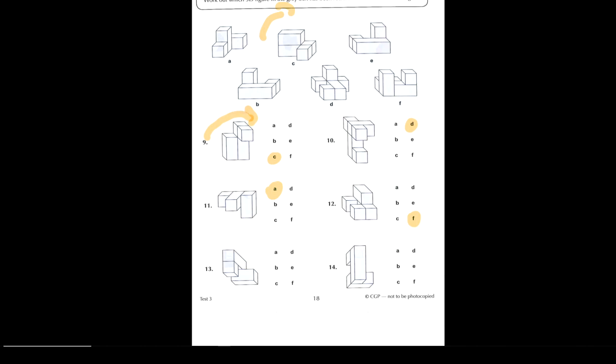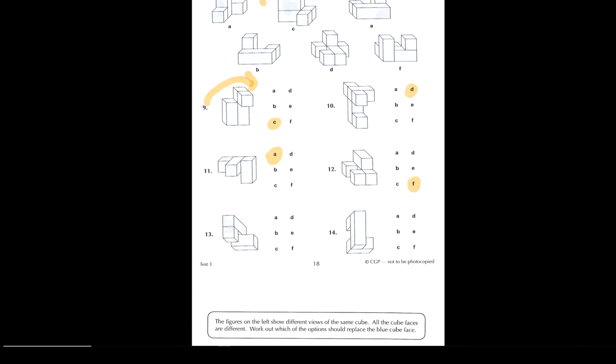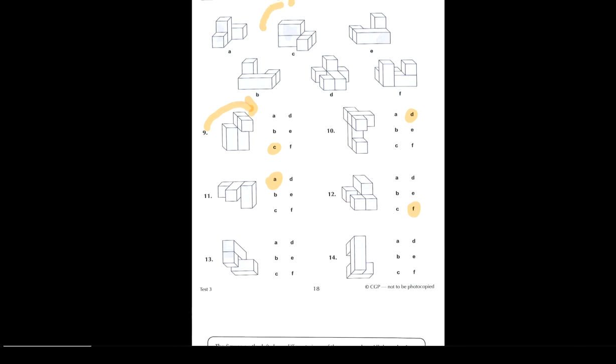Number thirteen — Bakar. Correct, thirteen is B. Number fourteen — best of Aisha. Number fourteen is E, because you've got the bit that sticks out, you've got the other piece there, and those two are on the same level.